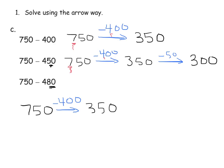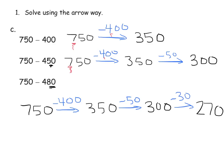Now we have 80 that we're supposed to subtract, but we only have 50 here. So I'm going to subtract by 50, which brings us down to 300. So far we have subtracted 450, and we need to subtract 30 more in order to subtract our 80. So I'm going to subtract 30 more. Students might need to carefully count down by tens, and that's how they'll end up getting 270. We should look back to make sure — did we really subtract 480? Yes: here's 400, here's 50, here's 30. Total, that's 480. So we know our answer is 270.